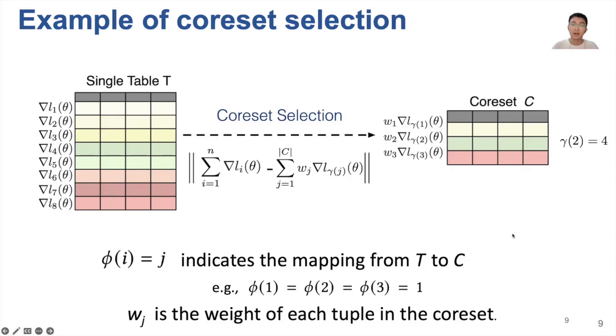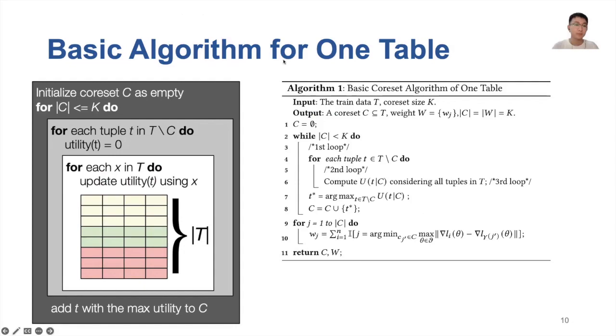Therefore, coreset selection is to select a subset with a fixed size, such as well as the mappings, which determines the weights. The basic coreset algorithm is illustrated in the figure. Initialized with an empty coreset C, a coreset of size k is achieved using three nested for loops. Each iteration of the first for loop will add tuple with the maximum utility to the coreset. The utility of a tuple denotes the reduction of gradient approximation error after adding the tuple into the coreset. Each iteration of the second iteration will compute the utility of a tuple t that is not in the coreset. In the third for loop, it iterates all tuples in T to compute the utility of the tuple being mirrored in the second for loop. Finally, it computes the weight of each tuple in the coreset, which will be used to approximate the full gradient.